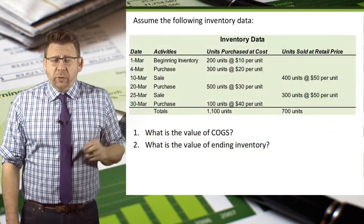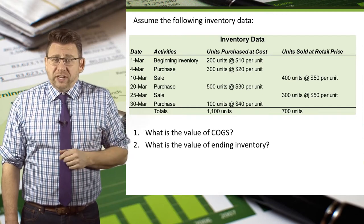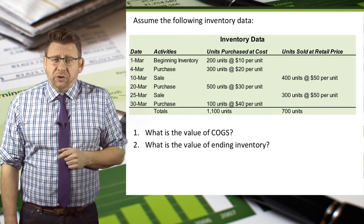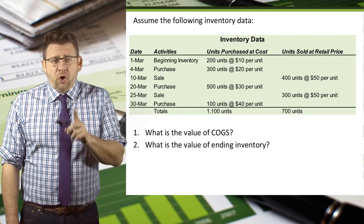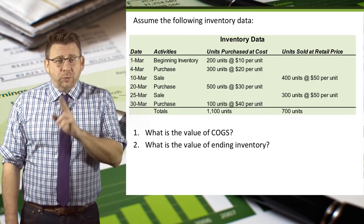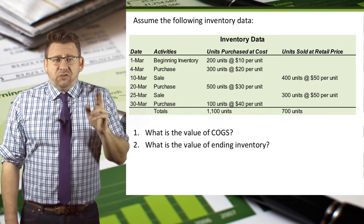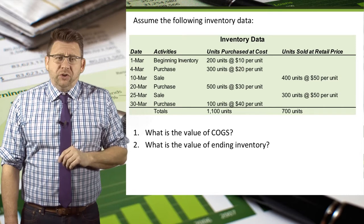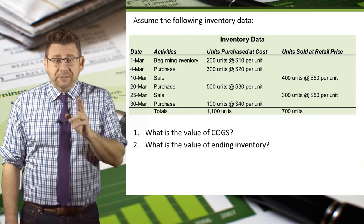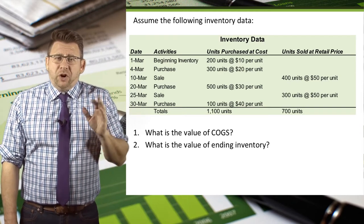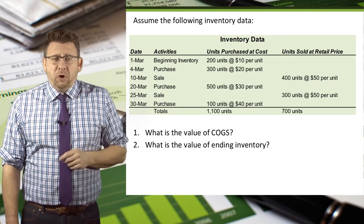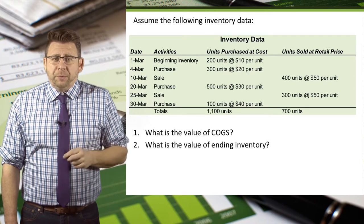Let's assume the following inventory data. March 1st: beginning inventory is 200 units at a cost of $10 each. March 4th: we purchased an additional 300 units at $20 each. March 10th: we sold 400 units at a price of $50 each — that's the retail price, not the cost. March 20th: we purchased an additional 500 units at $30 each. March 25th: we sold 300 units at $50 each. And finally, March 30th: we purchased 100 units at $40 each. You can pause the video to write that down and start it back up when you're ready.